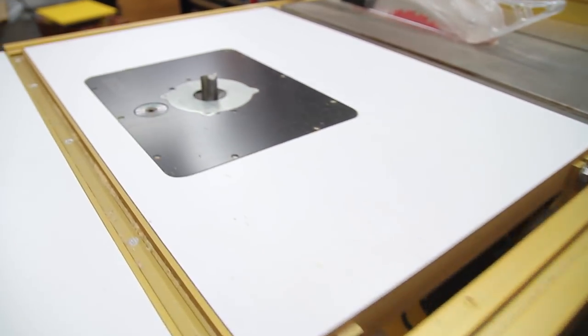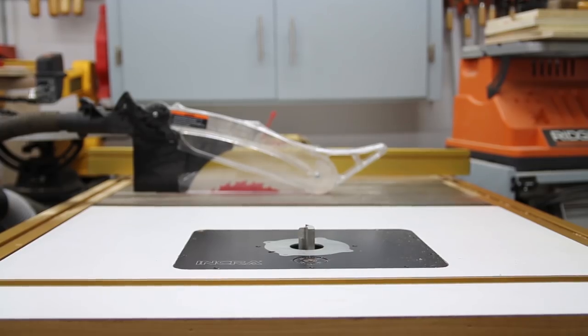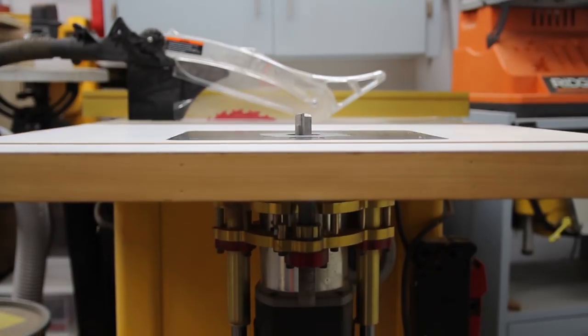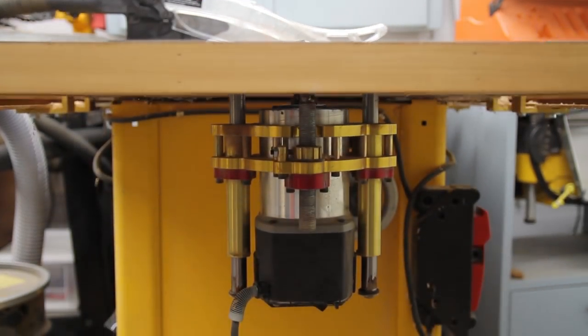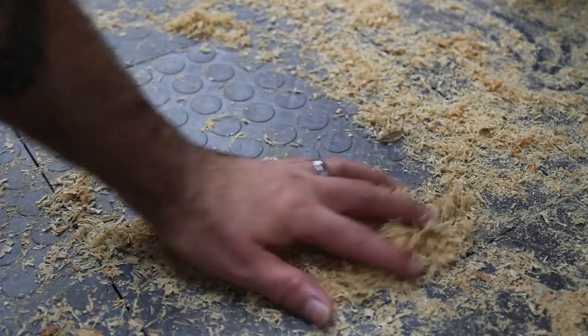This is my router table. I built it as an extension wing of my table saw. It's a 15 amp Porter Cable router in an Incra lift and I love this thing. The only problem is dust. Lots and lots of dust.